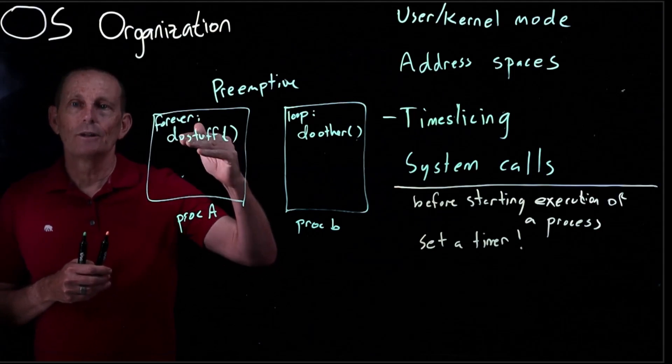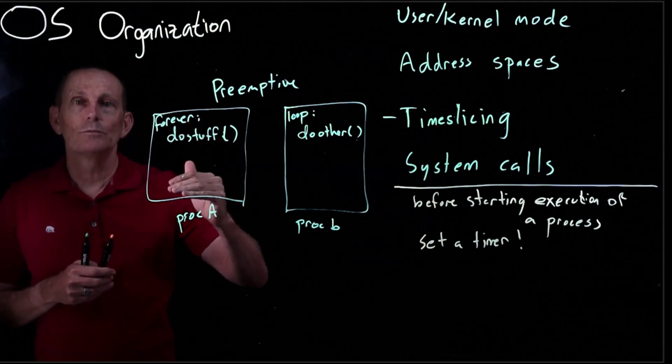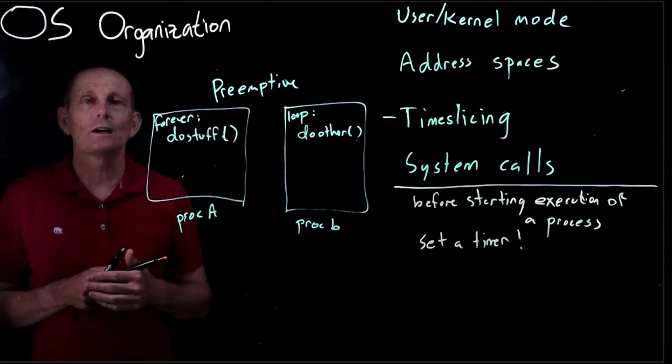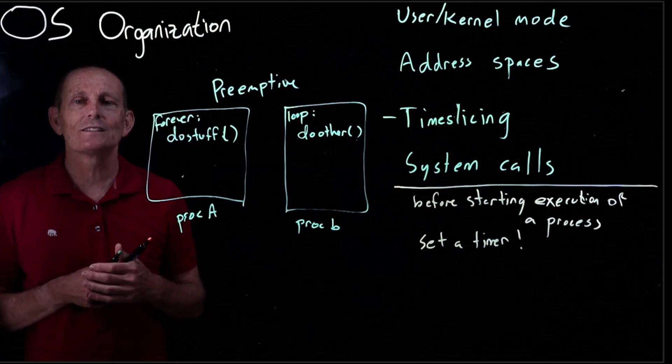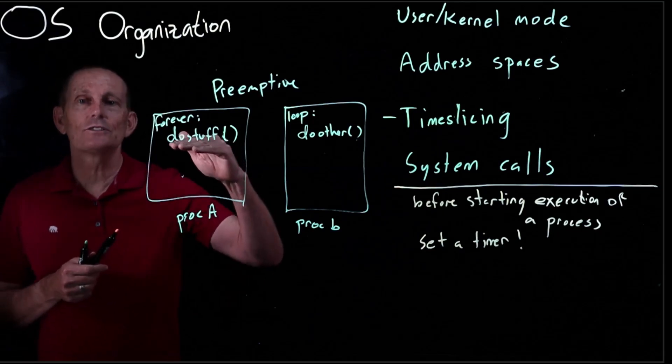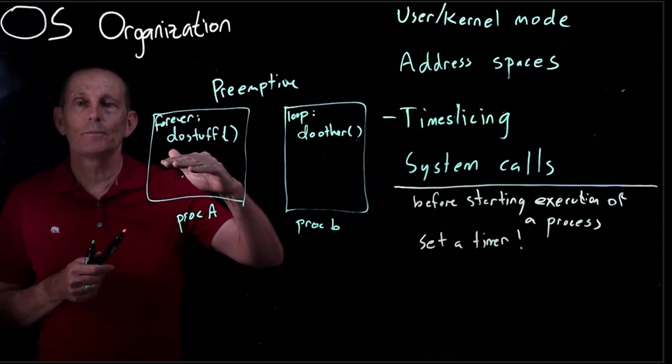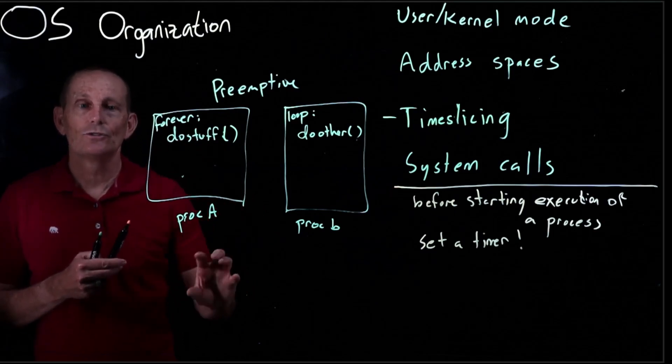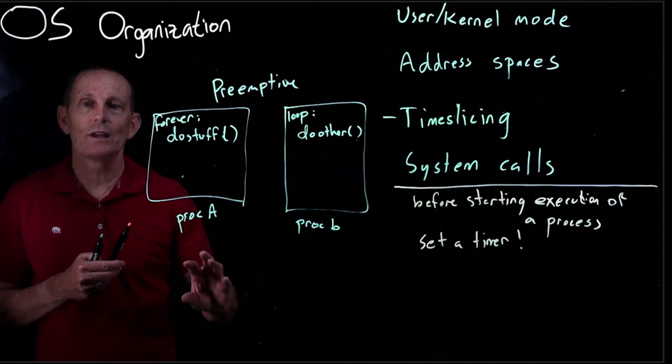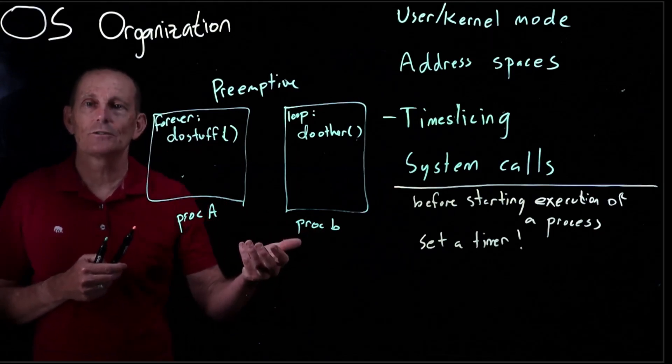Process A either calls a system call before that 10 milliseconds is up. Let's assume I said 10. Okay so set a timer for 10 milliseconds and then process A calls a system call before that 10 milliseconds is up. In that case the kernel can then decide to stop process A running and run process B by doing a context switch.